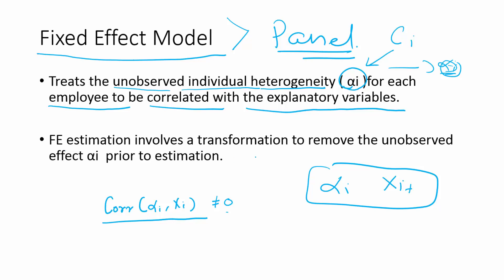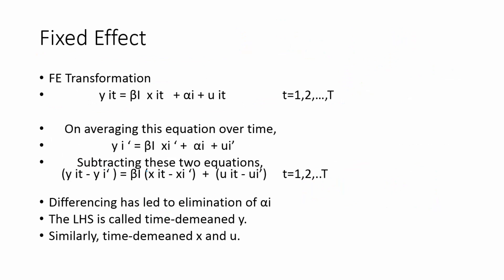The estimation involves a transformation to remove the unobserved effect, similar to first-difference estimation. We eliminate the alpha_i term before doing the estimation. This is an introduction, so we won't go into all the theoretical details — you can study those independently. Fixed effect transformation is the key concept here.